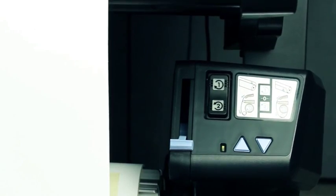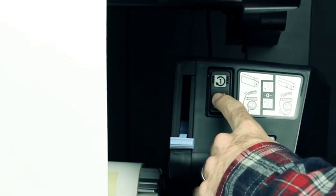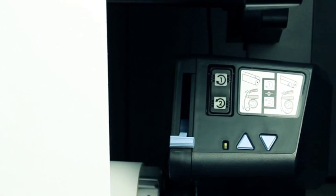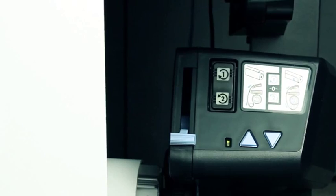Use the winding direction switch on the take-up reel motor to select the winding direction. Setting 1 winds the substrate so that the printed image faces in. Setting 2 winds the substrate so that the printed image faces out.